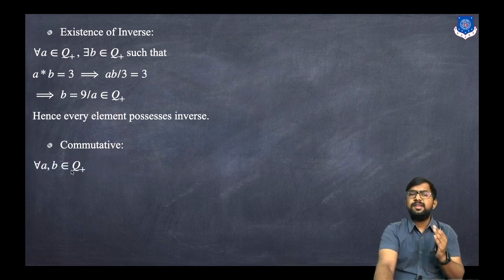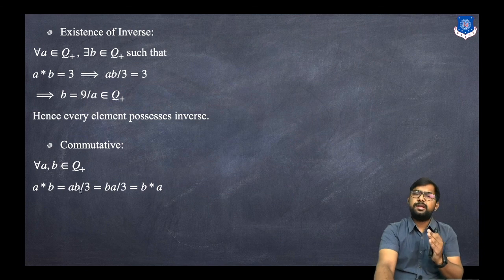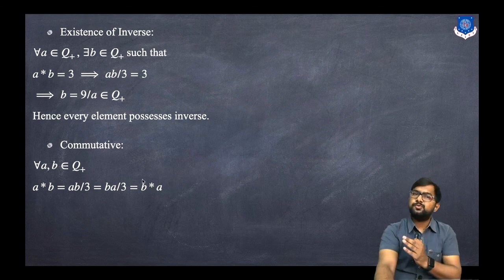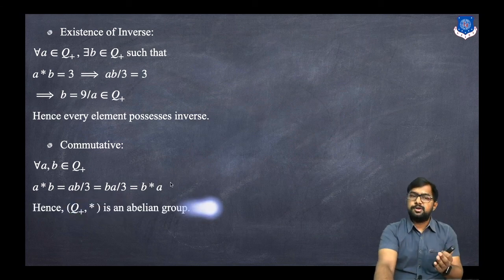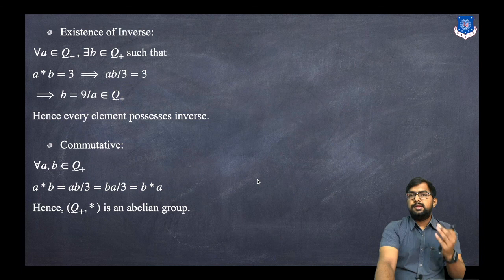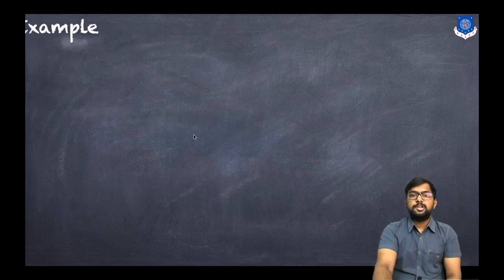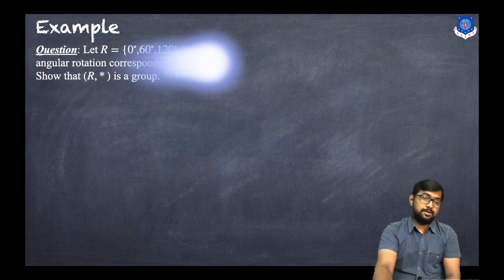For commutativity: a star b = ab/3, and b star a = ba/3. Since ab = ba, we have a star b = b star a, so it is commutative. Hence Q+ with the operation star is an abelian group. This is how you can show that a set with an operation is an abelian group.